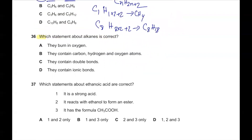Question number 36. Which statement about alkanes is correct? They burn in oxygen — yes, alkanes burn in oxygen, this is correct. They contain carbon, hydrogen, and oxygen atoms — wrong, alkanes are hydrocarbons and do not contain oxygen. They contain double bonds — wrong, alkanes do not contain carbon-carbon double bonds. They contain ionic bonds — wrong, alkanes are organic compounds formed by covalent bonds. So 36A is the correct answer.